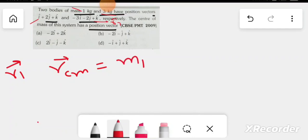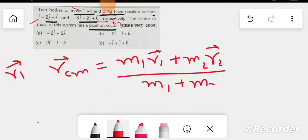M1 R1 plus M2 R2 divided by M1 plus M2. Okay, I am going to tell you.